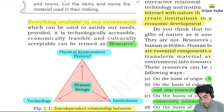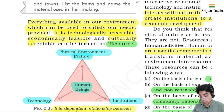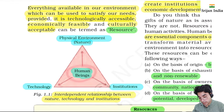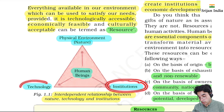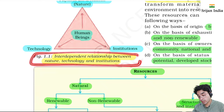Everything available in our environment which can be used to satisfy our needs, provided it is technologically accessible and economically feasible and culturally acceptable - then we call it a resource. Human beings, the physical environment, institutions, and technology - these are interdependent. This is the relationship between nature, technology, and institutions.